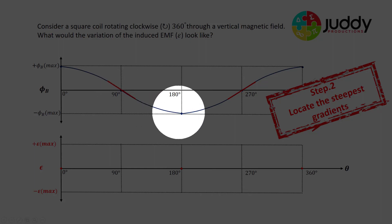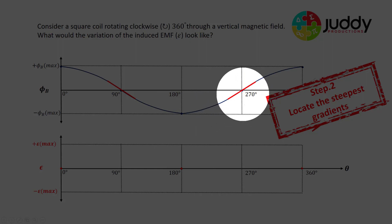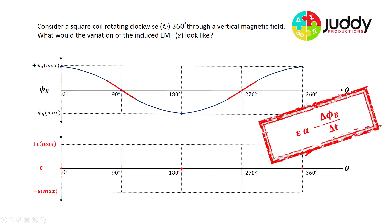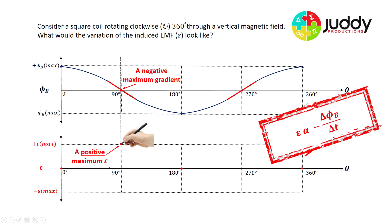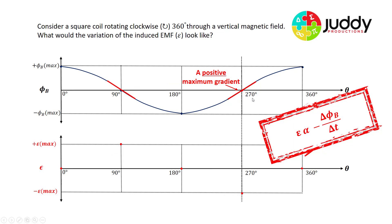The gradient then flattens out to zero, increases to a maximum at 270 degrees, and then flattens back to zero at 360 degrees. Since the EMF is proportional to the negative rate of change of flux, a negative maximum gradient at 90 degrees will generate a positive maximum EMF. Likewise, a positive maximum gradient at 270 degrees will result in a negative maximum EMF.